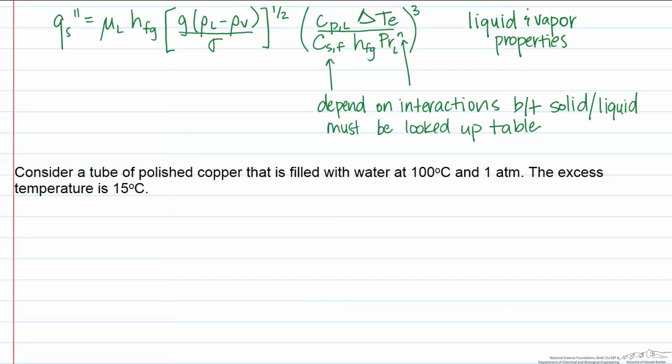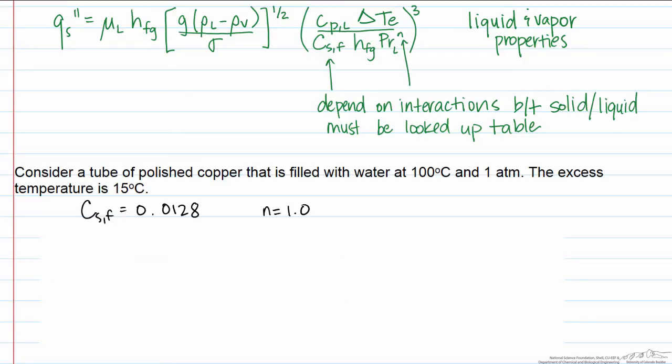The first thing we're going to do is look up these constants for polished copper with water at 100 degrees C, and we find that our first constant is equal to 0.0128, and our N is equal to 1. Now let's go ahead and look up the properties.